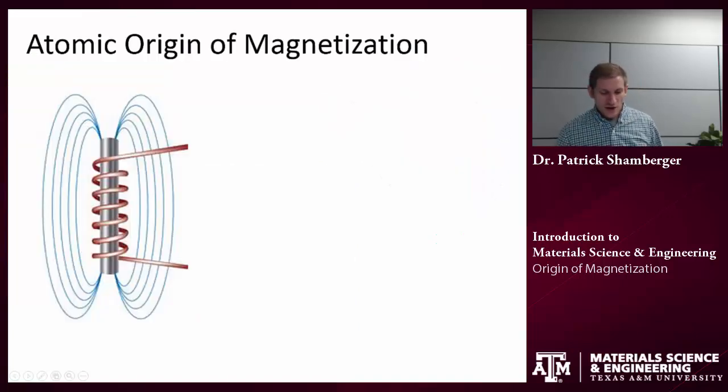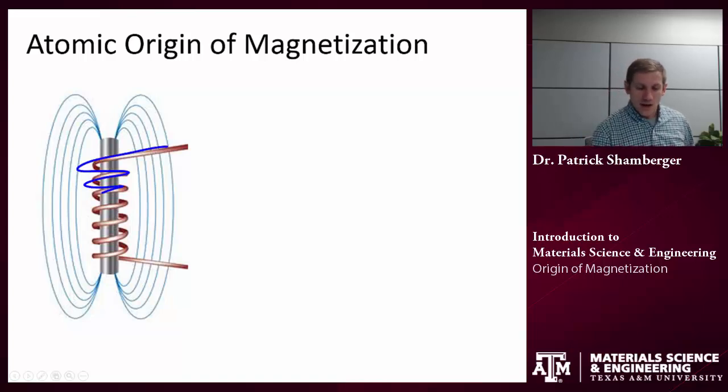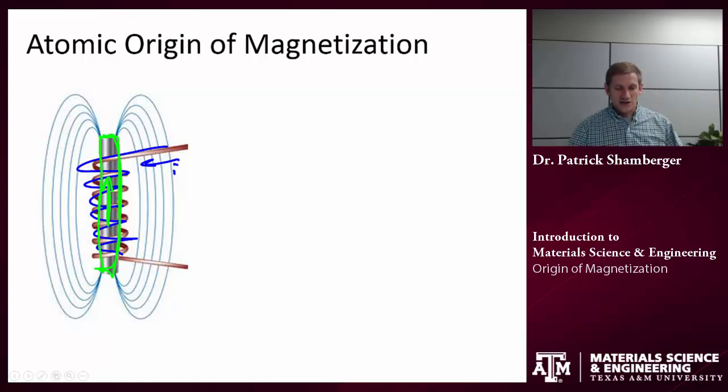And we're going to start off with the classical picture of taking a metal, and we can wrap a wire around it. And when we do that, if we flow current through the wire, then we generate a magnetic field. So we'll generate a strong magnetic field within that loop of wire. And if we have a soft ferromagnet in here, something like iron, it's going to get even stronger. And you can see the stray field that comes out around.